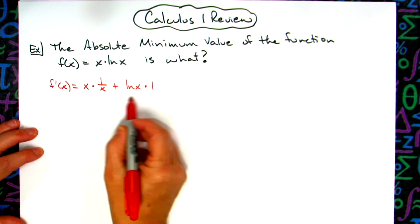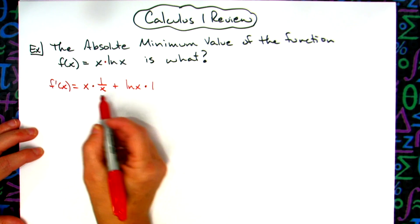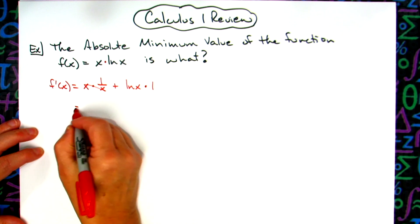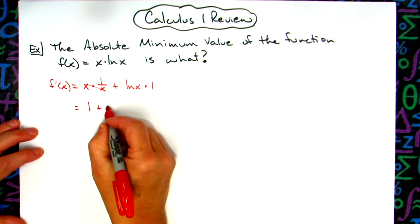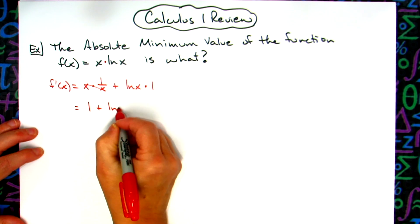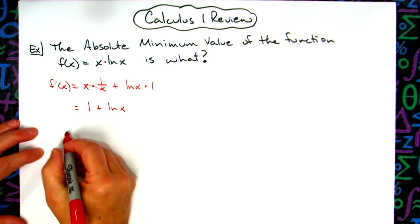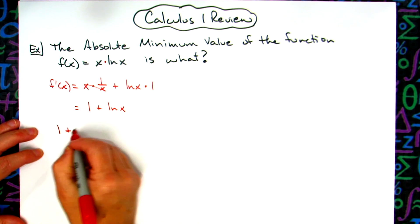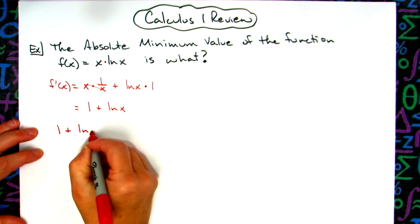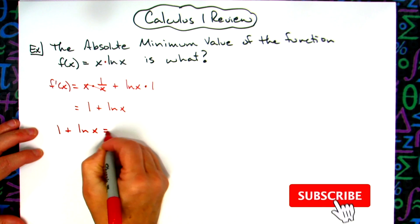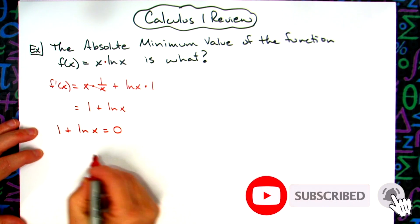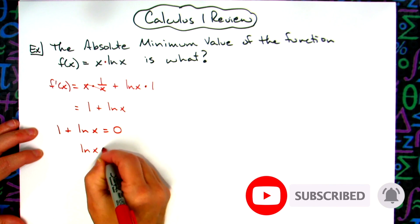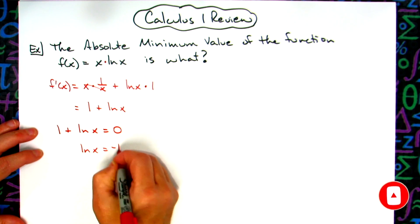At this point I'm going to simplify this. I've got an x over an x here, so this will come down to 1 + ln(x). We're going to set that equal to 0, so 1 + ln(x) = 0. Subtracting 1 from both sides gives us ln(x) = -1.